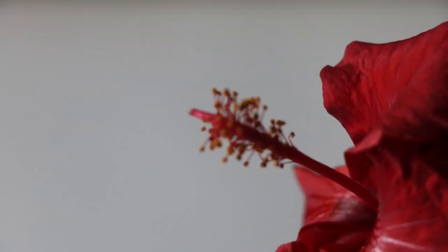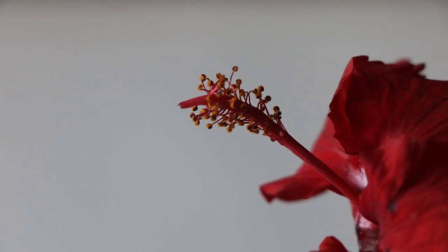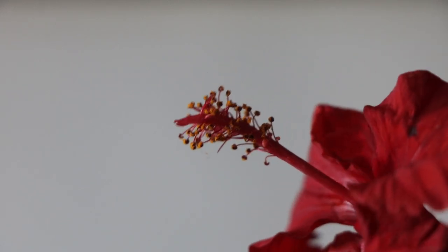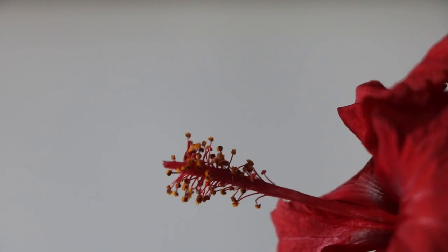The following is a zoom in of reproductive parts of flower. The red long tube is called stigma and the yellow part is called anther from where pollen grains are produced.